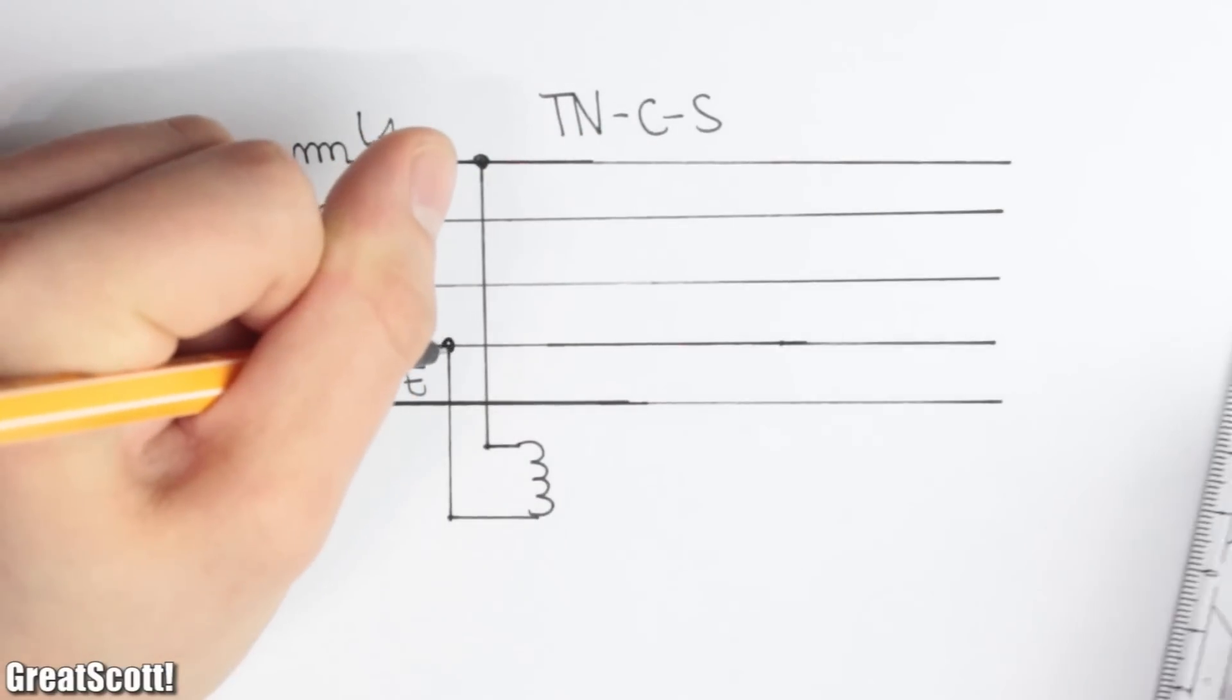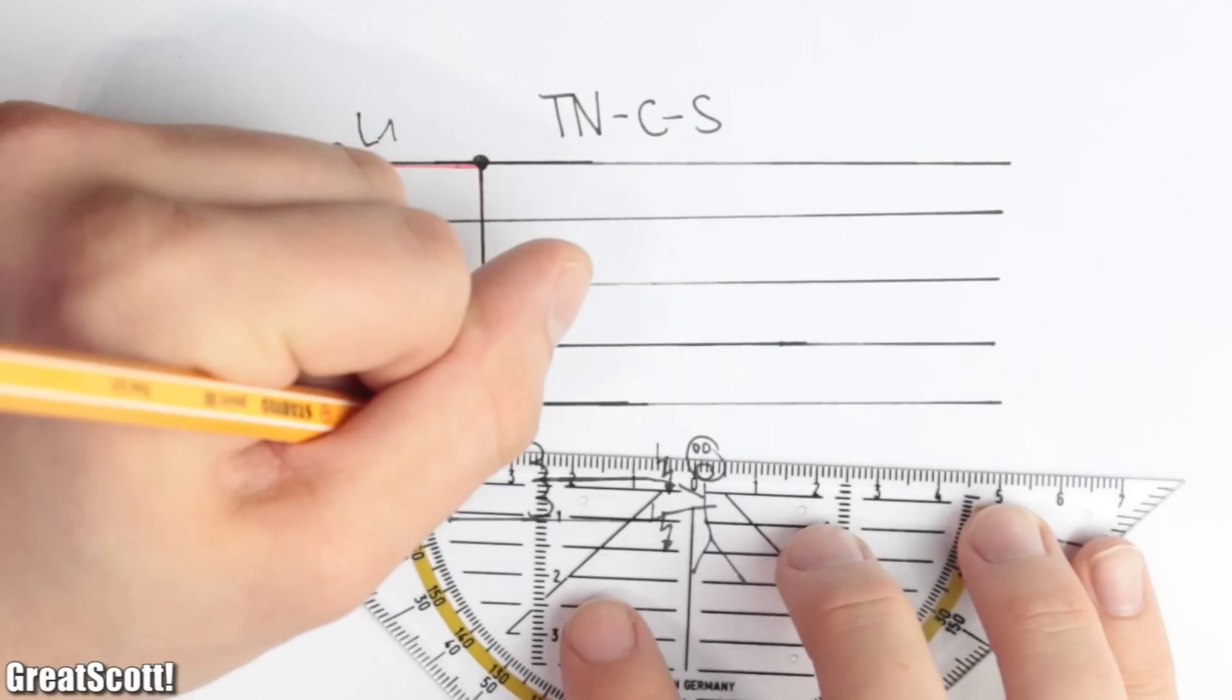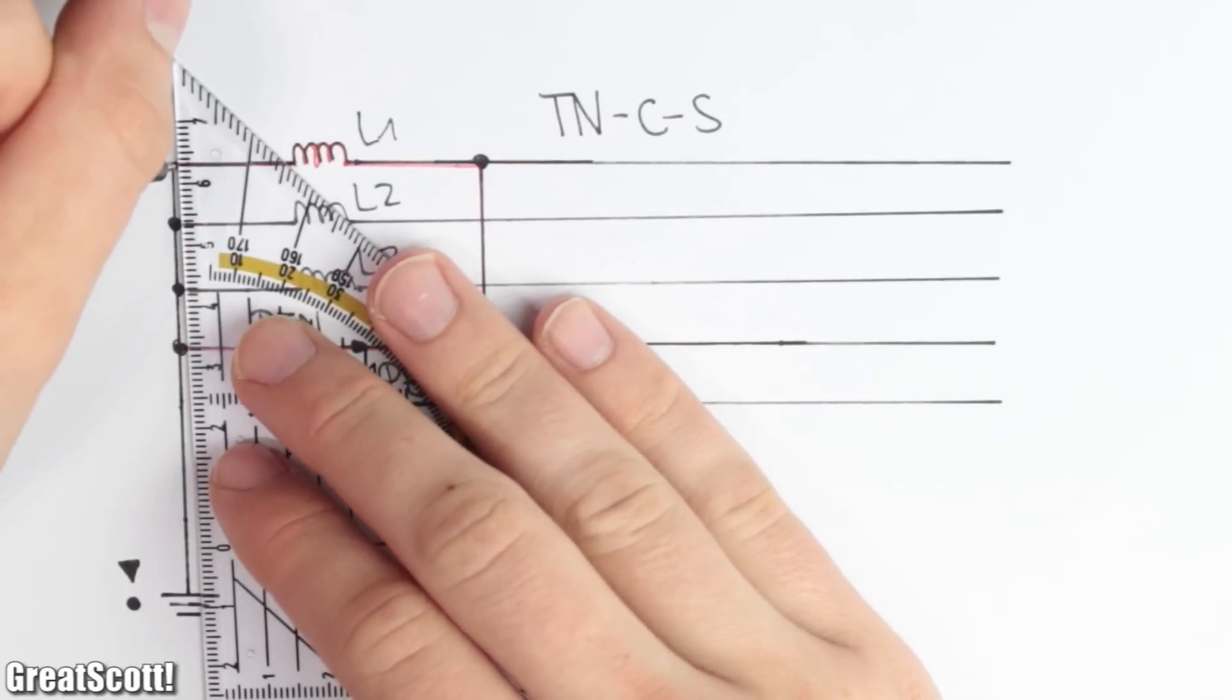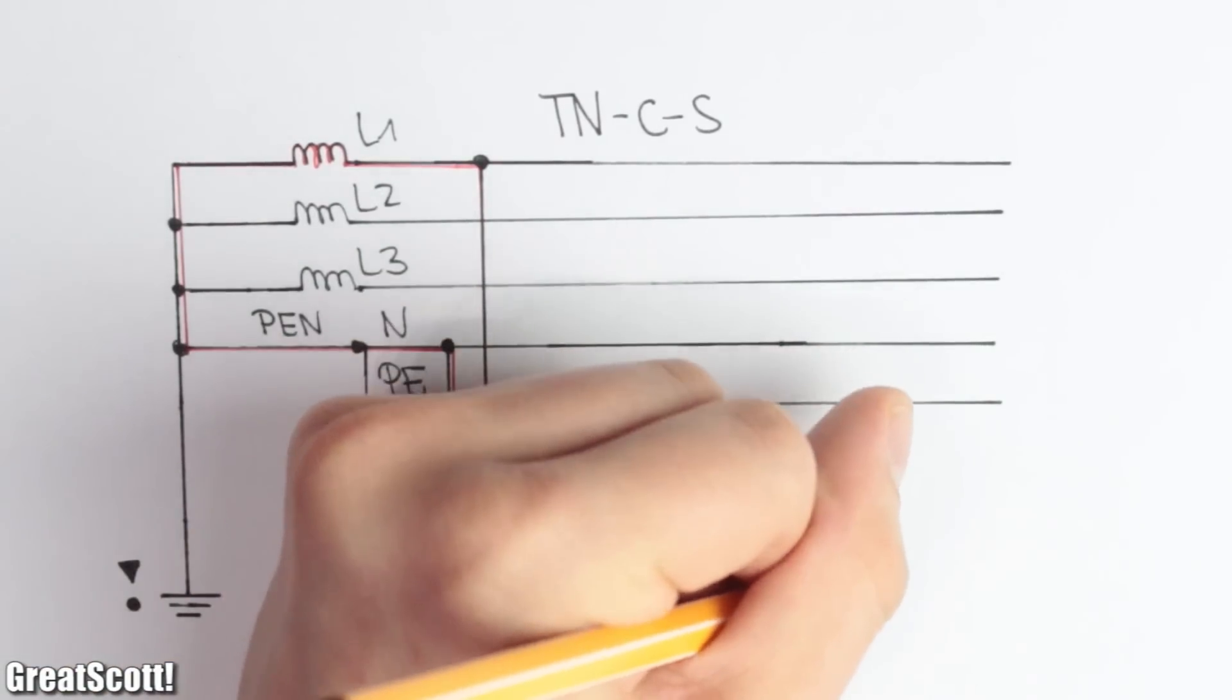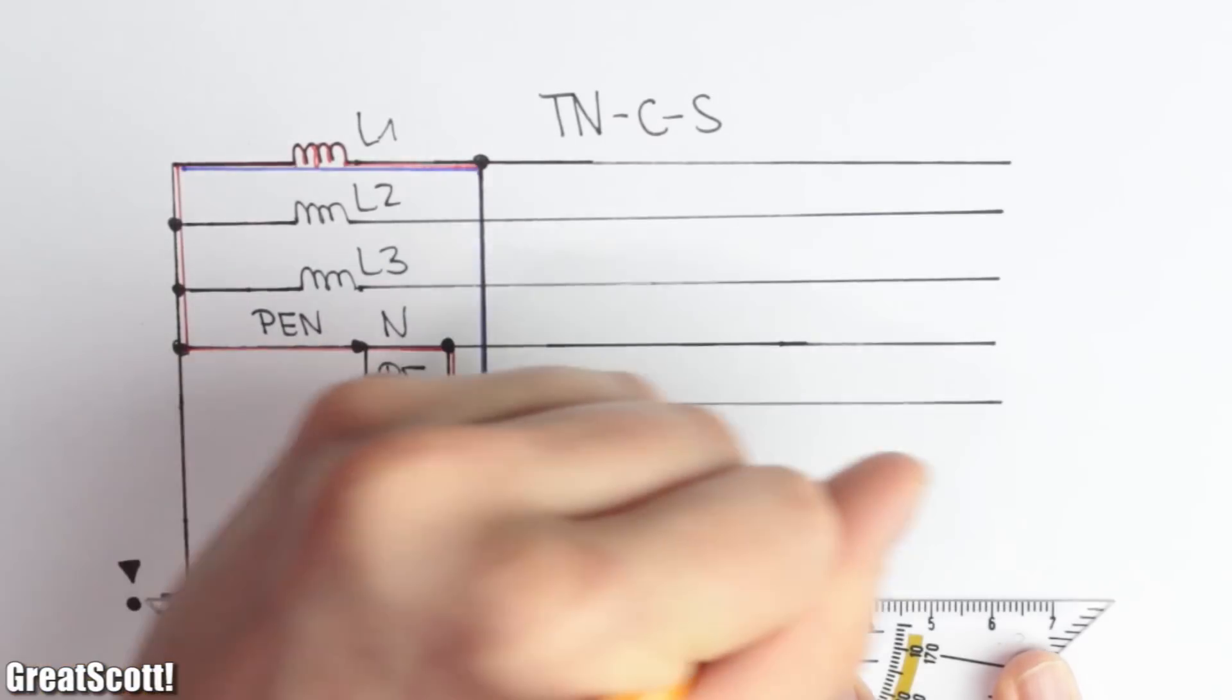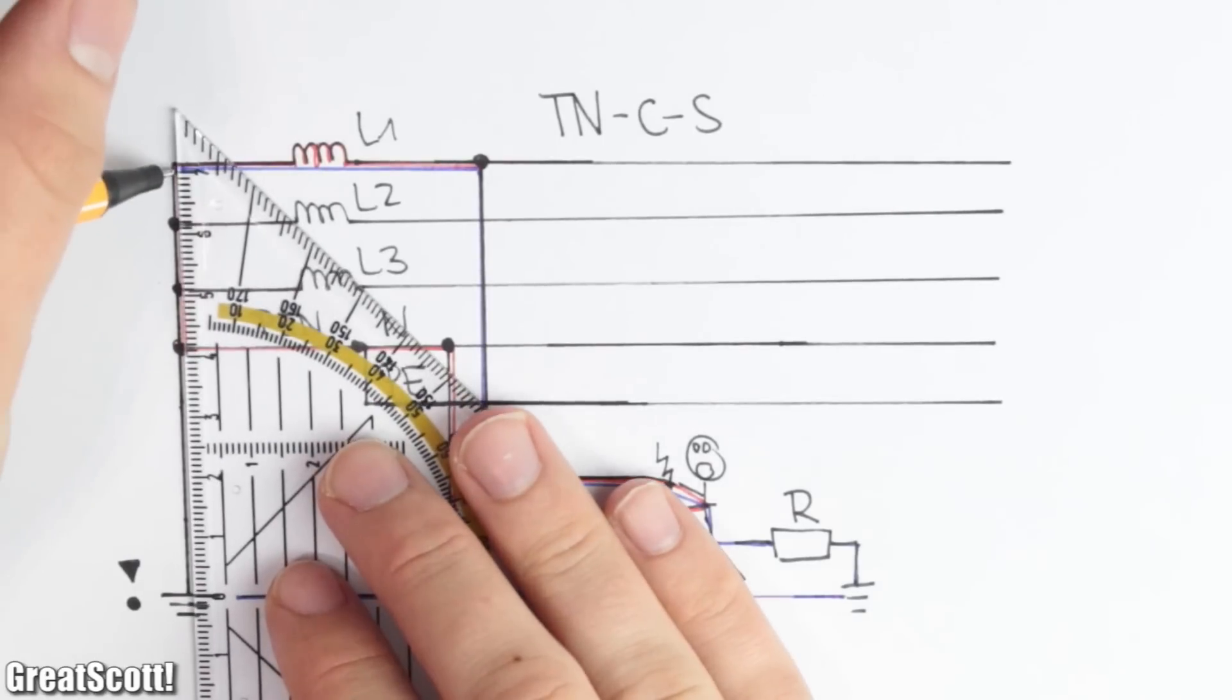If I would hook up my auto transformer and touch the output, current can flow through the live wire, my body and back to the supply transformer through the neutral. But in many instances, your own body can be connected to earth through a resistance. Which means an additional current can flow which has the potential to mess up the experiment.